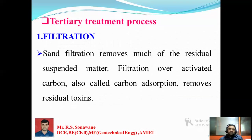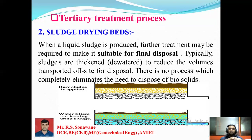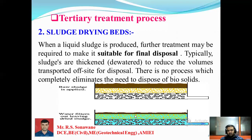In tertiary treatment, filtration is used: sand filtration removes much of the residual suspended matter, and filtration over activated carbon removes residual toxins through carbon adsorption. Different layers remove carbon dioxide and other contaminants through the filtration process, removing sludge through the filtering media. There are also sludge drying beds in tertiary treatment, suitable for final disposal. The liquid sludge produced from the treatment process requires dewatering — sludge is thickened to reduce volume for transport and off-site disposal. Granular media layers are used and the final disposed material exits in this direction.